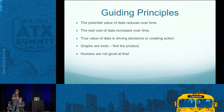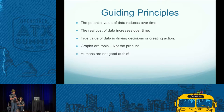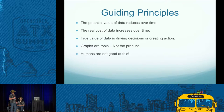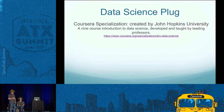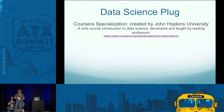These are my guiding principles developed over the last year — open for debate. The potential value of data reduces over time, but the cost of that data increases over time. The true value of data is driving a decision or an action. Graphs are tools, not the product. Humans aren't good at this, and if you accept that, taking a structured approach is much more natural. Most people think they're very good at this, and I think that leads them to make a lot of mistakes. This whole approach was prompted by exposure to data science. Coursera has a number of classes; Johns Hopkins University has a specialization that does a good job on these topics.